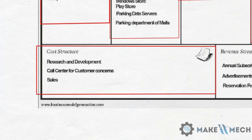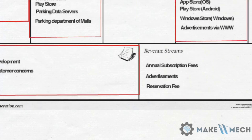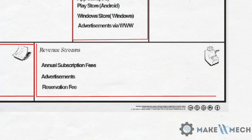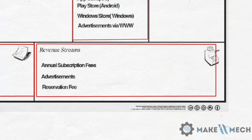In the bottom section we have two very important parts. First, the cost structure — here you list down all the costs associated with your startup. Look into your key resources, activities, and partners for direct or indirect associated costs.